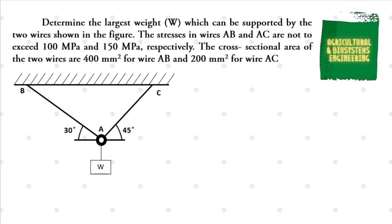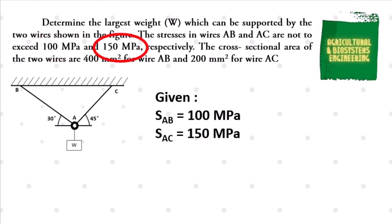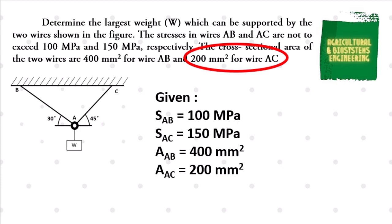The first thing to identify are the given, which are the following: stress at AB is equal to 100 MPa, stress at AC is equal to 150 MPa, cross-sectional area at AB is equal to 400 square millimeters, and cross-sectional area at AC is 200 square millimeters.